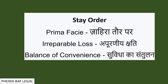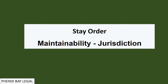These three things — prima facie case, irreparable loss, and balance of convenience — are what a court must see for any Stay Order. But when a judgment comes, there is an additional question that arises.